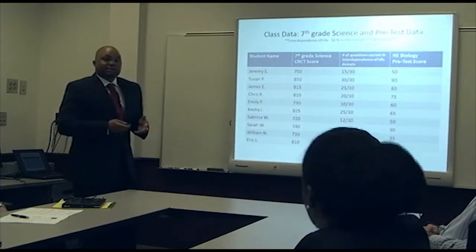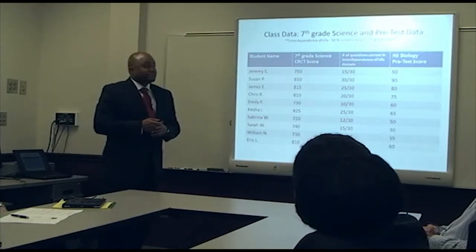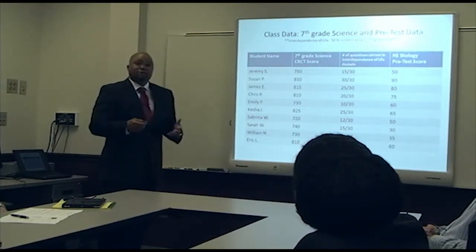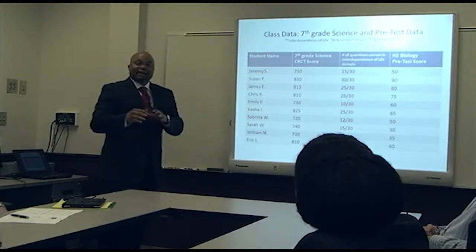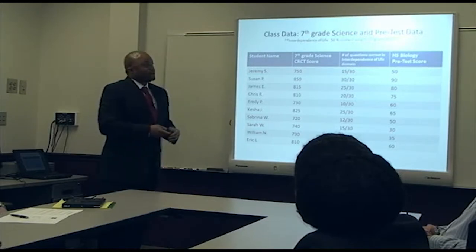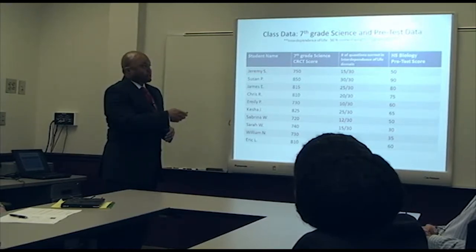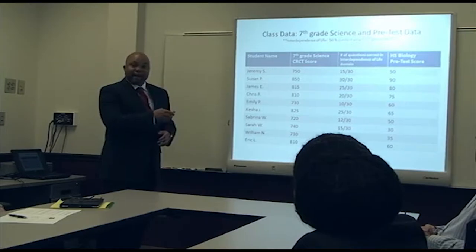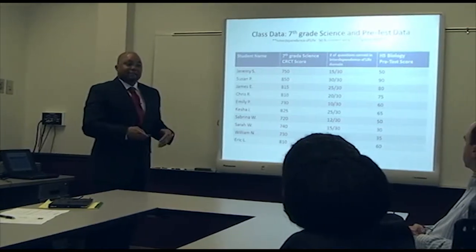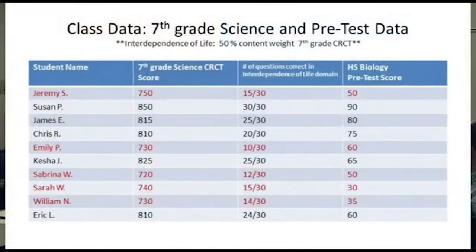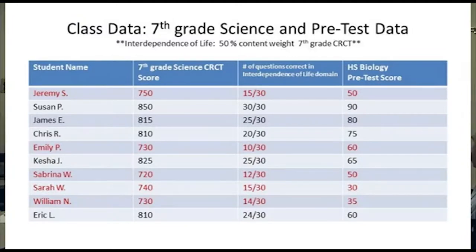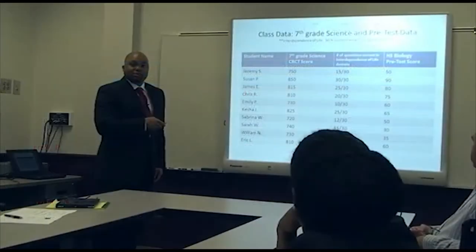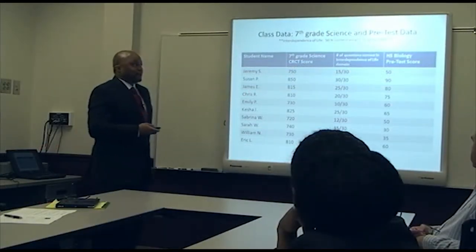We also wanted to consider the seventh grade CRCT scores. The reason we focused on seventh grade is that it parallels what students learn in ninth grade biology. The specific domain we focused on was interdependence of life, which deals with ecosystems, food chains, food webs, and how organisms gain energy from one another — connecting seventh grade life science to high school biology.